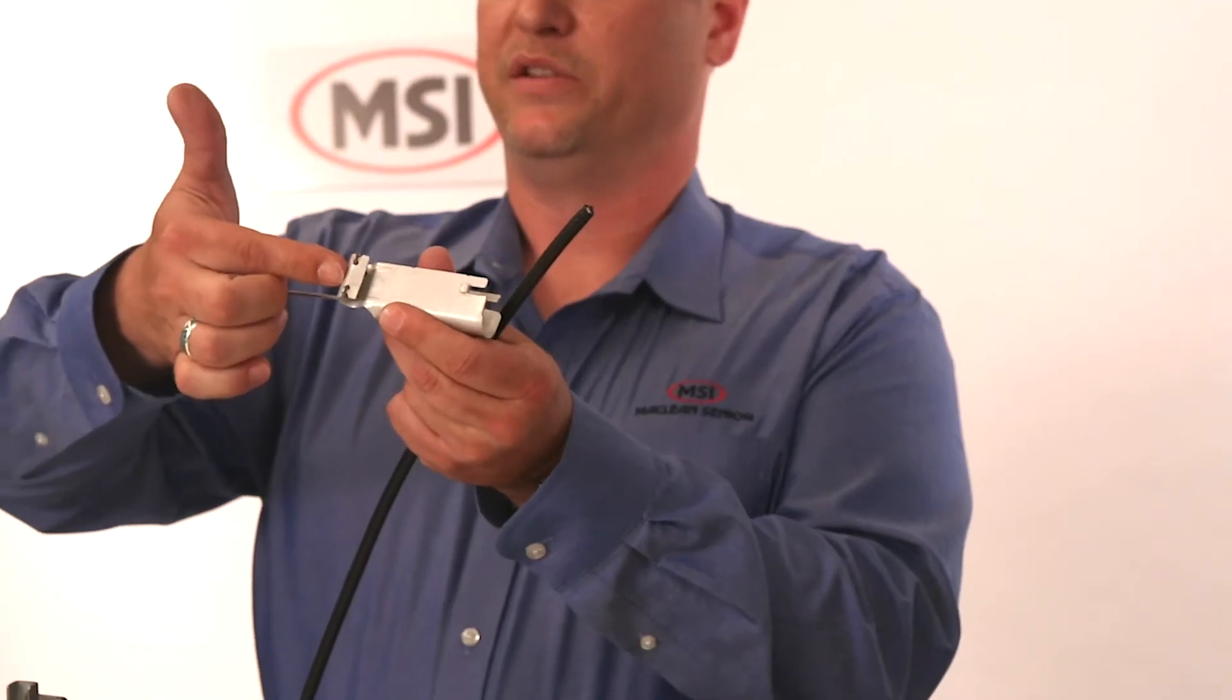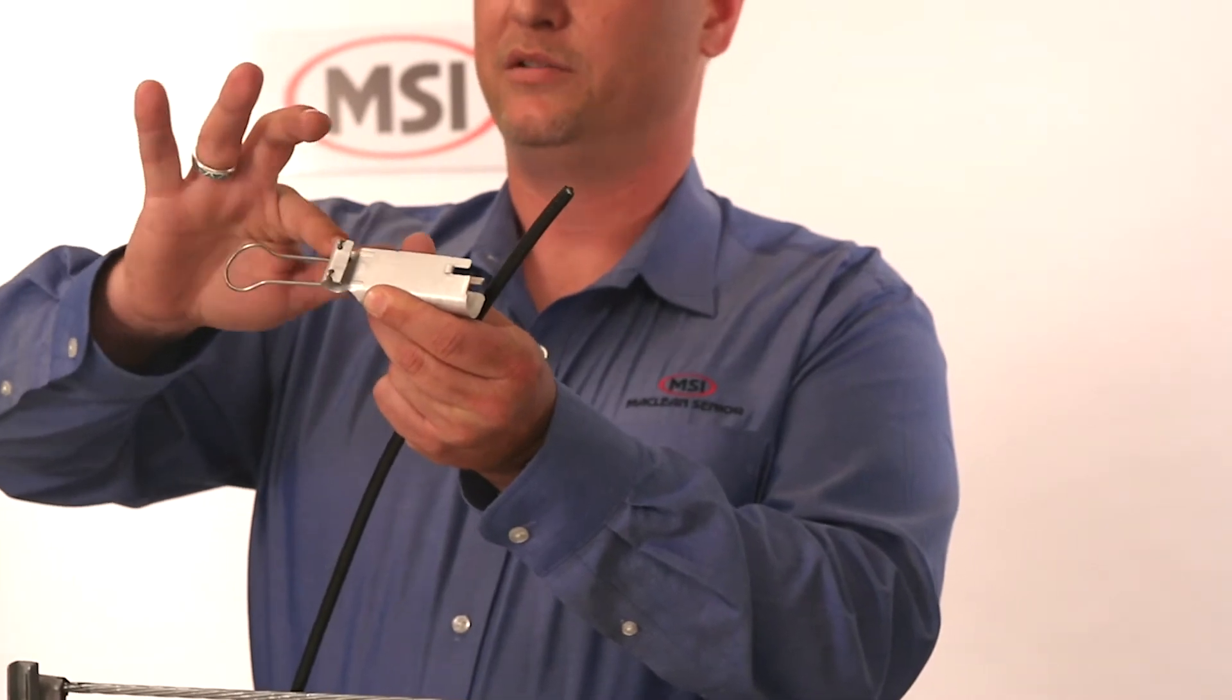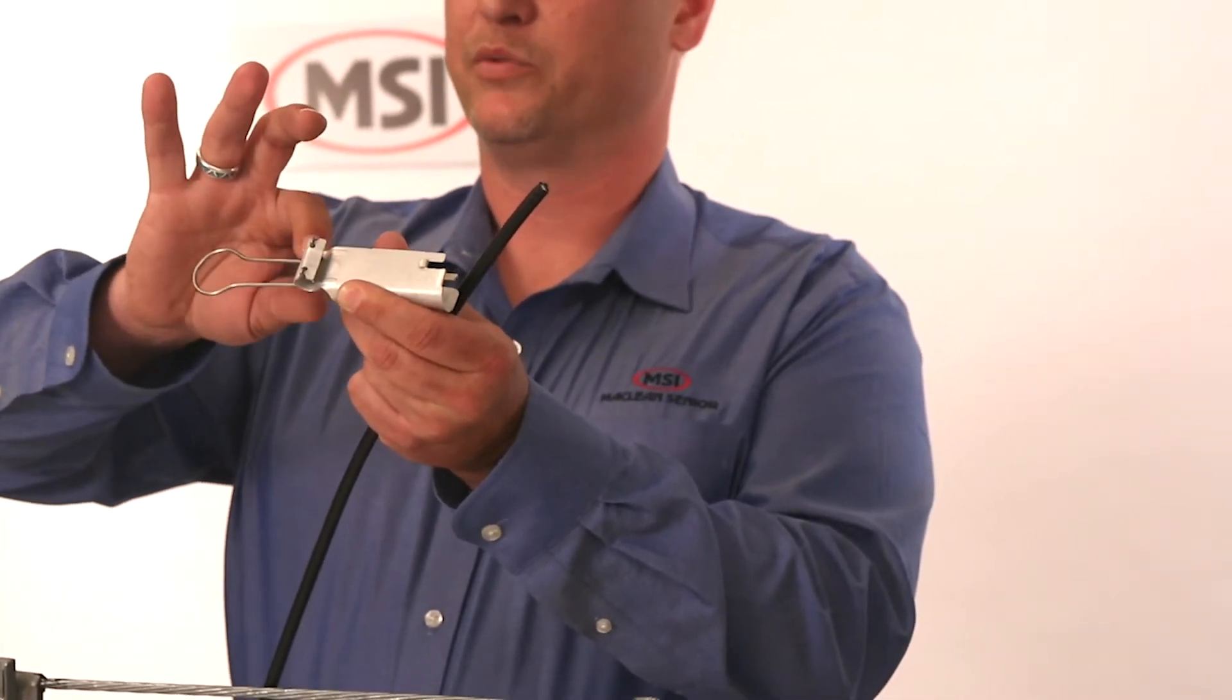You'll see an indentation in the center of the bale attachment. That's to keep the messenger centered so that it does not slip between the bale and the body of the clamp and pinch where you can have a break.